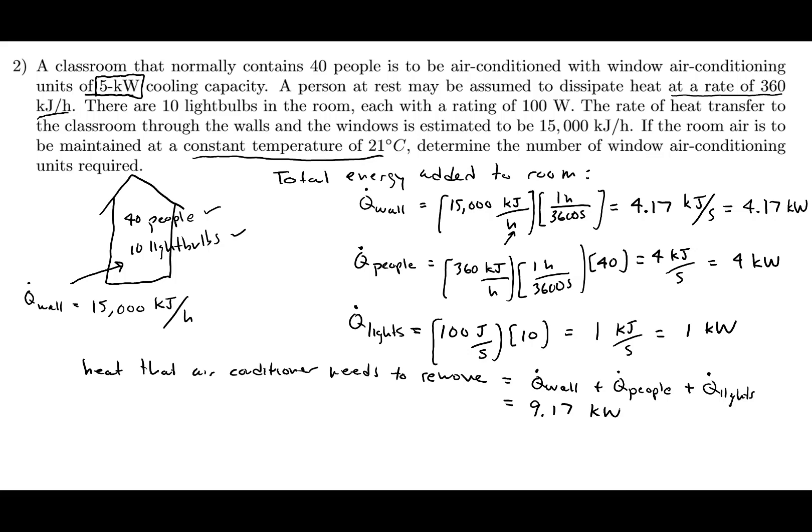We know that the capacity of each air conditioner is 5 kilowatts. It's asking us how many air conditioners we need. So we just take the amount of heat that we need to remove, which is 9.17 kilowatts, and divide it by the capacity of the air conditioner, which is 5 kilowatts. This works out to 1.83, so that means we need 2 units. We need 2 AC units.